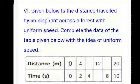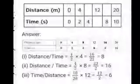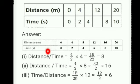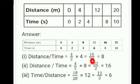Given below is the distance traveled by an elephant across a forest with uniform speed. Complete the table using the idea of uniform speed. Distance: 0, 4, dash, 12, dash, 20. Time: 0, 2, 4, dash, 8, 10. Speed equals distance divided by time. Using 4 divided by 2, speed equals 2 km per unit time; so the missing distance values are 8 and 16, and the missing time value is 6.